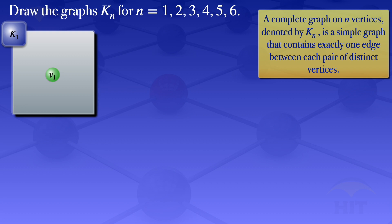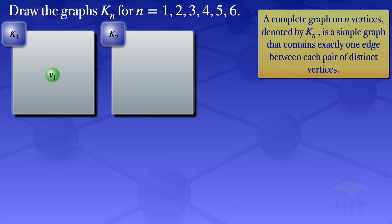I now go on to K2. For K2, we are looking at a graph with 2 vertices. So we want a simple graph which has 2 vertices — vertex 1 and vertex 2. We draw an edge between those two vertices. So this graph is now complete: it's a simple graph that contains exactly one edge between the pair of vertices V1 and V2.